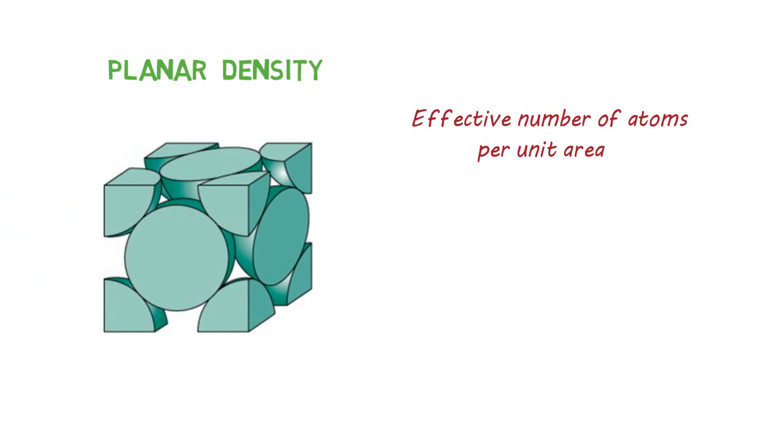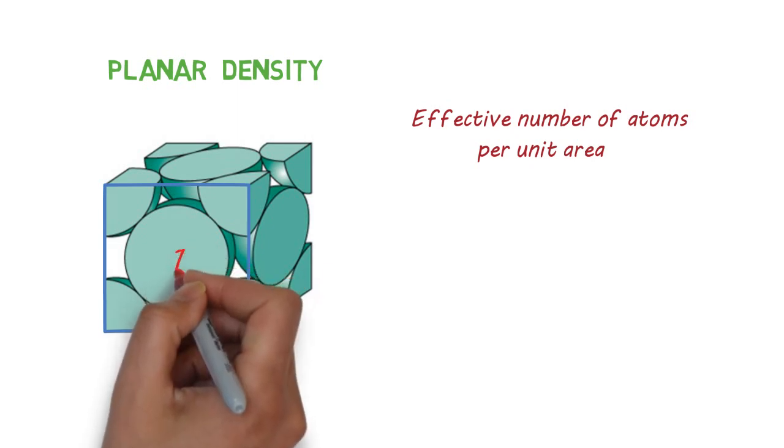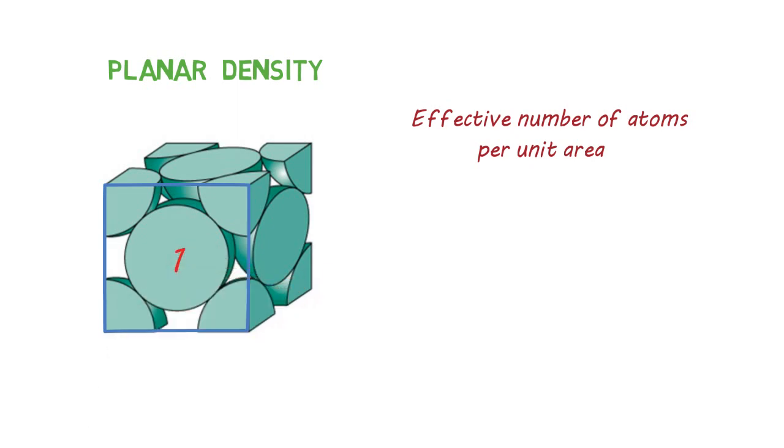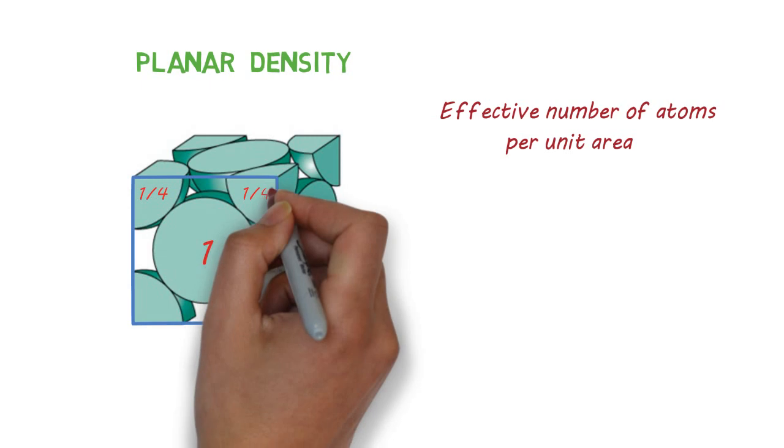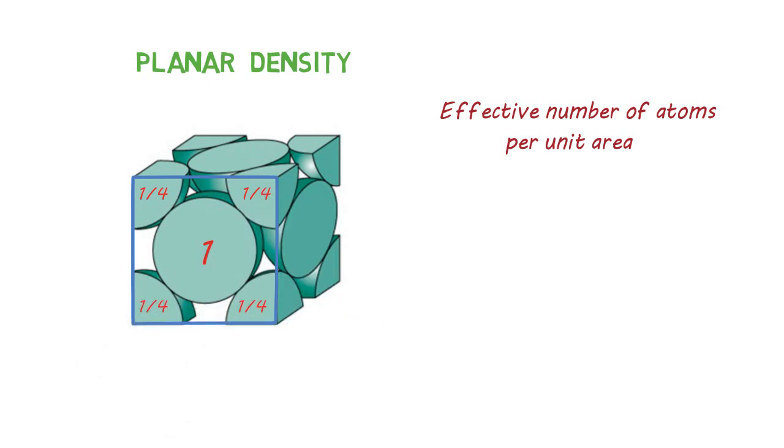Let's say we have an FCC arrangement like this and we want to calculate the planar density of the front facing plane. So at first calculate the effective number of atoms on the plane. As we can see, the atom at face center is contributing one complete atom to the plane and corner atoms are contributing one fourth part of it.